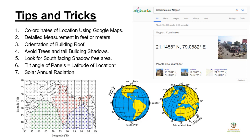Next, take detailed measurements of the total open area in feet and meters using a measuring tape. Also take the orientation of the building roof. Check where slopes are oriented and in which direction trees and tall building shadows will be visible. You do not want any shadows falling on solar panels. Always look for a south-facing, shadow-free area.